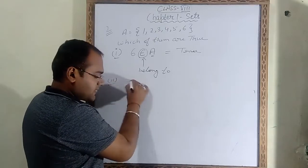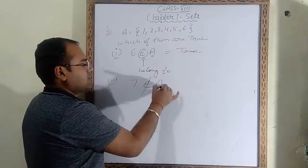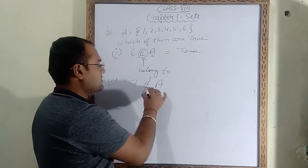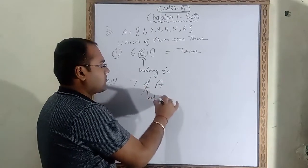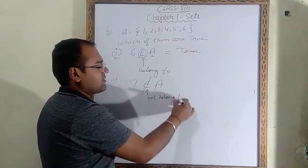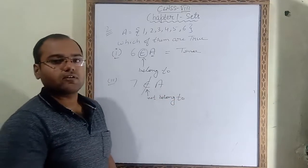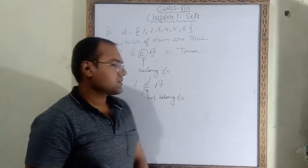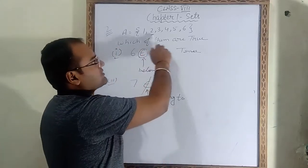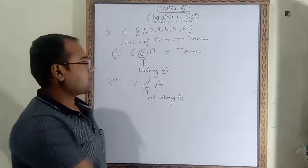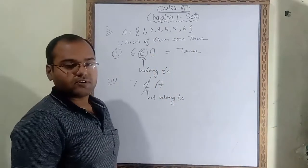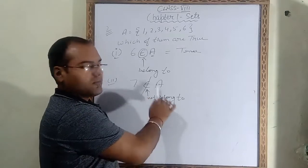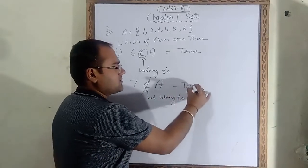Second part: 7 ∉ A. The belong-to sign is cancelled, meaning 'not belong to.' We will read it as: 7 does not belong to A. We check: is 7 coming in set A? 7 is not coming, meaning 7 does not belong to A. That means this statement is also true.